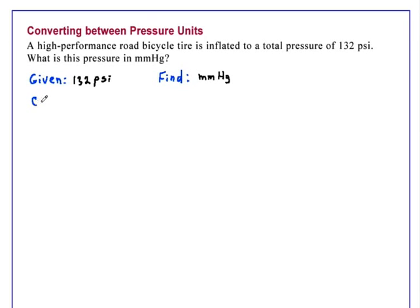In our conceptual plan, we realize we have to find a table of conversion factors, and we don't find a direct conversion from psi to millimeters of mercury. So what we'll have to do is go through the intermediate pressure unit, the atmosphere. We'll go from psi to atmospheres, and finally to millimeters of mercury.